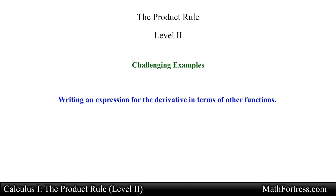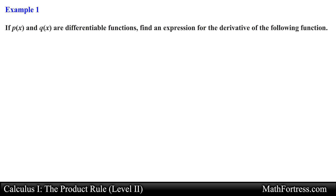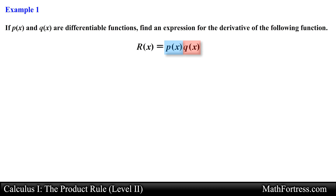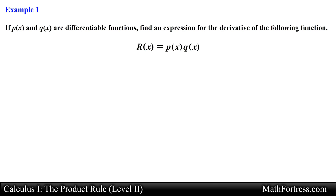Let's take a look at the first example. If p and q are differentiable functions, find an expression for the derivative of the following function: r equals p times q. Notice that in this example we are given the function r which is written in terms of two other functions, in this case p and q. The problem is asking us to find the derivative of this function. At first glance it might be a little weird that we are asked to find the derivative of r written in this manner.